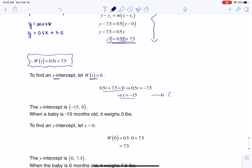So technically, my x-intercept would be negative 15 comma 0. Now keep in mind, the units on this, this is months and this is pounds. Those are our x-units and our y-units respectively. So this is a nonsense interpretation, but when a baby is negative 15 months old, which it never will be, that's when it technically weighs 0 pounds.